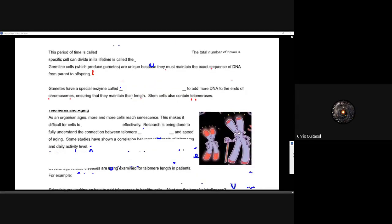So the period of time with which this happens is called cell senescence. This is the total number of times that a specific cell can divide in its lifetime, and it is called the Hayflick limit. So this Hayflick limit is essentially the total number of times a specific cell can divide, and it's approximately 50 times for the vast majority of cells. There are several cells that replicate quite quickly and don't really adhere to the Hayflick limit, and I'll talk a bit about those.